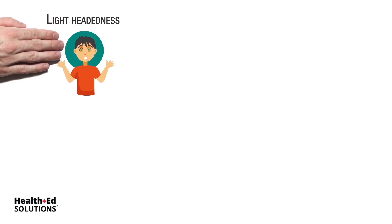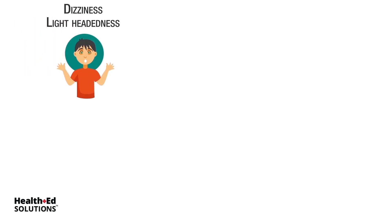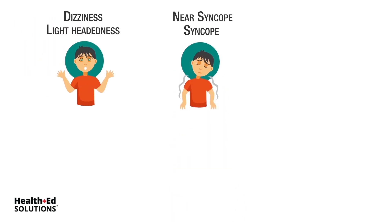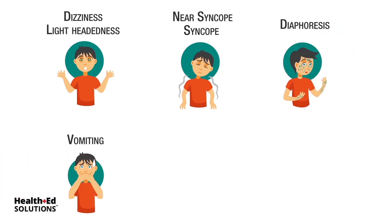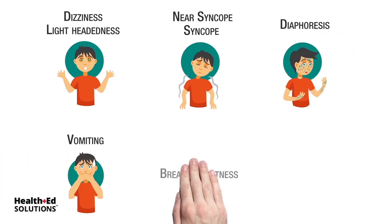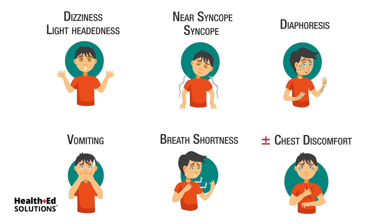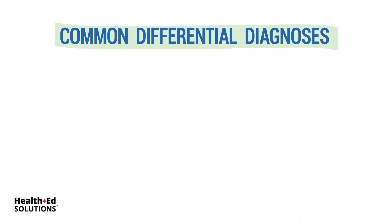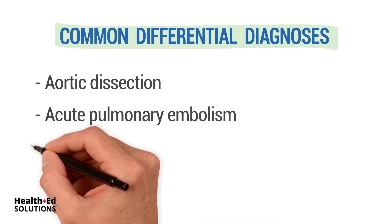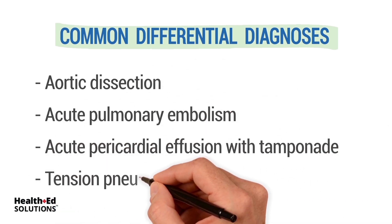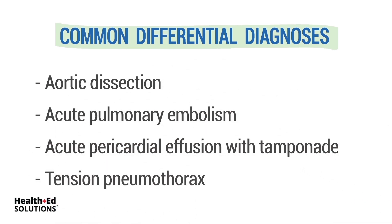They may also complain of lightheadedness, dizziness, syncope or near syncope, diaphoresis, or vomiting. A significant finding is sudden shortness of breath with or without chest discomfort. Some common differential diagnoses include aortic dissection, acute pulmonary embolism, acute pericardial effusion with tamponade, and tension pneumothorax.